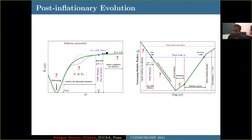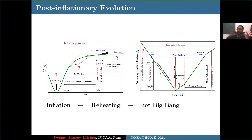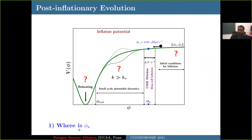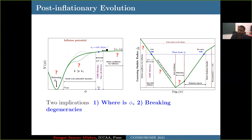To break the degeneracy, there are a few important facts to take into account. The first is the post-inflationary physics. After inflation, the scalar field oscillates around the minimum and reheats the universe. Our universe makes a transition from the inflationary accelerating phase to the hot big bang phase through this period of reheating, where particle production happens and then the universe thermalizes. There are two implications of the reheating phase: first, the value of phi-star — the field value when the pivot scale exits the Hubble radius — depends on how many e-folds before the end of inflation horizon exit occurs, which is uncertain unless we know the details of reheating. If we know the exact reheating details, we can predict phi-star for a given model. Second, by specifying reheating details, we can actually break the degeneracies of some inflationary models.